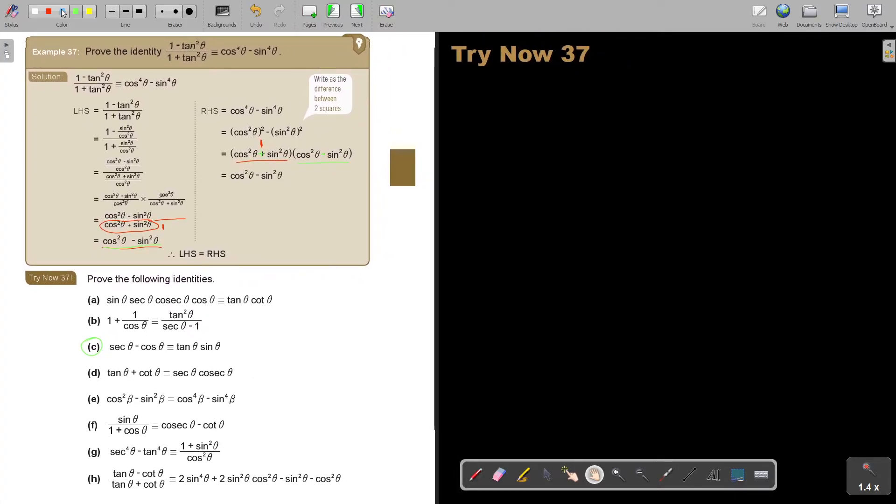Okay. Number C. Oh, I just want to take all the yellow. Sec theta minus cos theta, identity, tan theta sin theta. Now, sometimes this is a bit challenging, but luckily I have a sec there. So, let's start with the left-hand side.